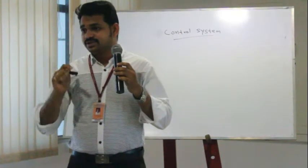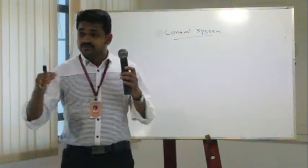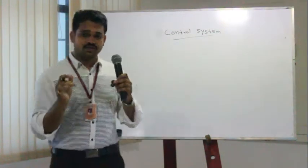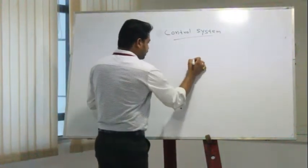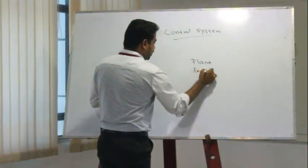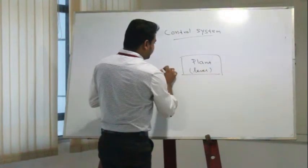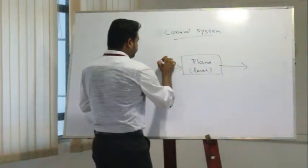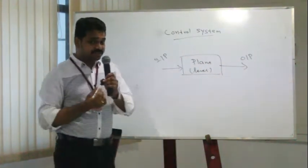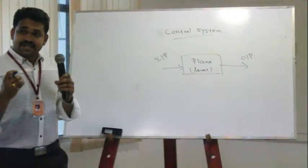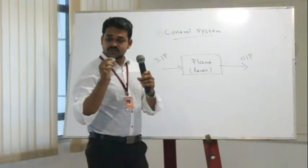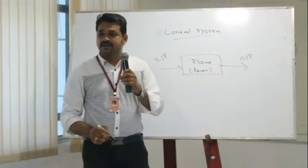Now we are moving to the control system. When the output quantity is controlled by a very important input quantity, that is called a control system. We will give you a controller for the controlling part, and here there is an error-related component. Some person values are used as an input — as a reference — to get the output.